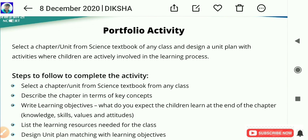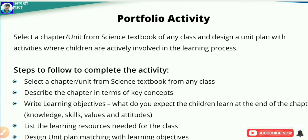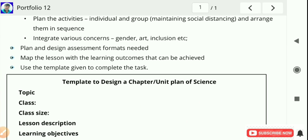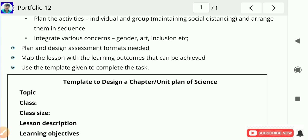Now coming to the portfolio activity. What is the portfolio activity given in module 12 Pedagogy of Science? The task is: select a chapter or unit from the science textbook of any class and design a unit plan with activities where children are actually involved in the learning process. You have to select a unit and describe the chapter in terms of key concepts, write learning objectives and resources, design a unit plan, and plan and design assessment formats needed. Also integrate various concerns like gender, art, or inclusion.